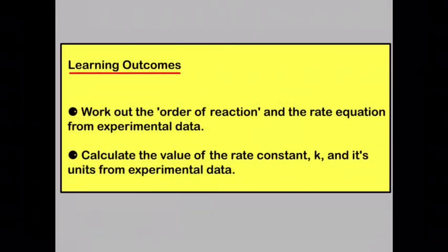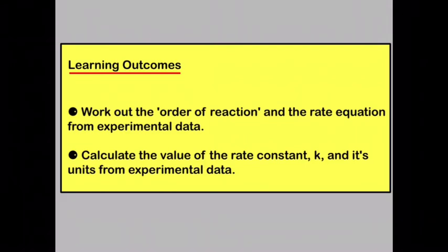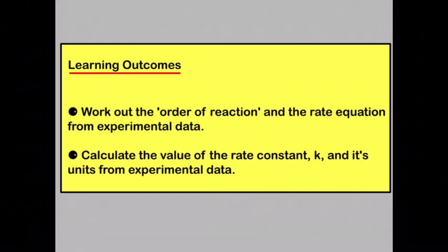By now you should be able to work out the order of reaction and the rate equation from experimental data. You should also be able to calculate the value of the rate constant K and its units from experimental data.